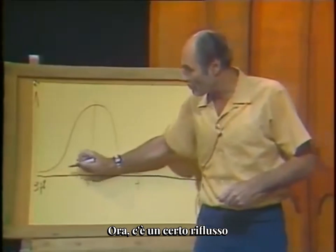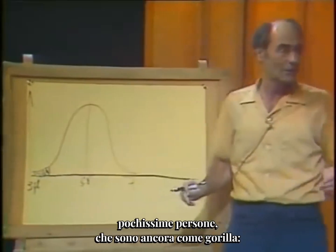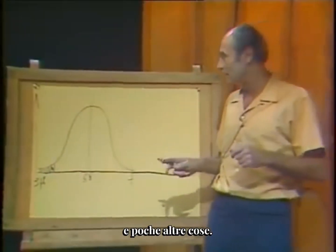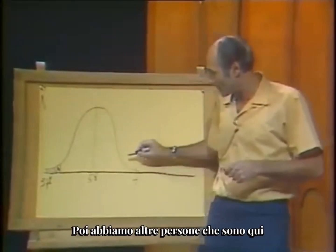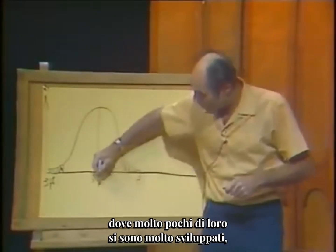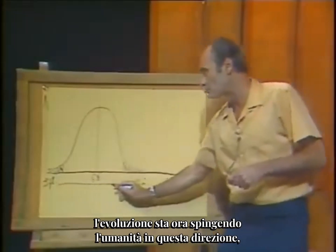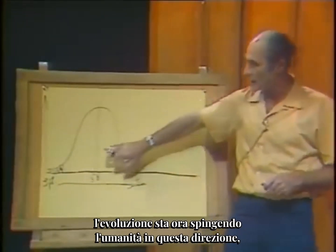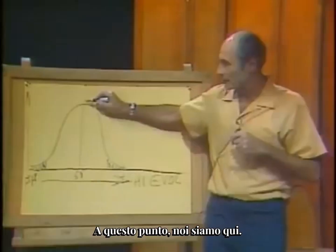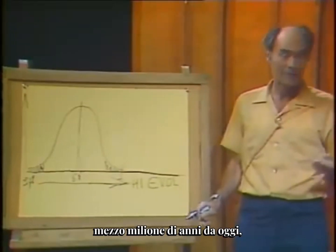Now there is some back-throw. That is, there are some people here in this area - very few people who are still gorilla-like. They beat their chest when they see their neighbors and a few other things. And then we have other people here in this corner, very few of them, who are very highly developed, because evolution is now pushing mankind in this direction, away from the gorilla types towards the very highly evolved people. What's going to happen maybe a million years from now, half a million years from now?